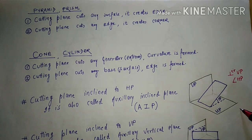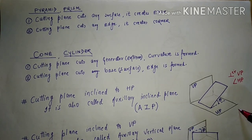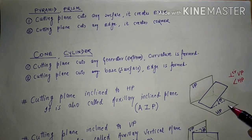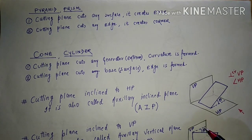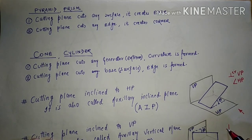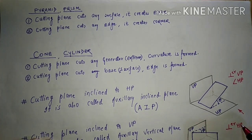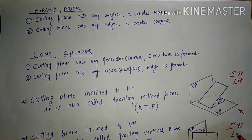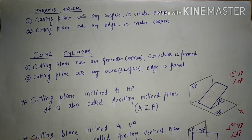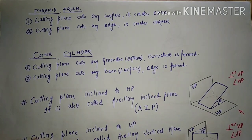From the front, from the direction of the observer, we can see a single line. Similarly, if this cutting plane line is inclined to the vertical plane, it makes an angle phi and is called a cutting plane perpendicular to HP and inclined to VP. This is sometimes also called an auxiliary vertical plane, AVP.